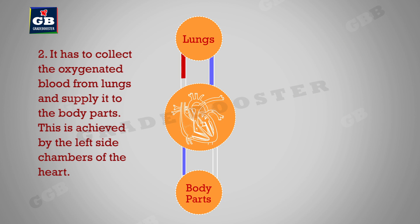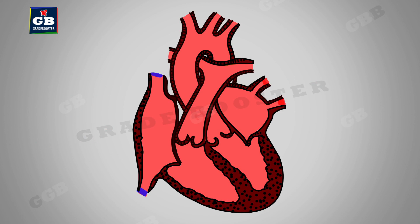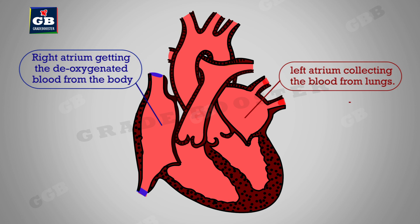The second job of the heart is to collect the oxygenated blood from the lungs and supply it to the body parts. This is achieved by the left side chambers of the heart. Importantly, it does both jobs simultaneously.